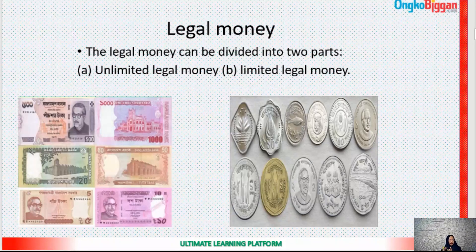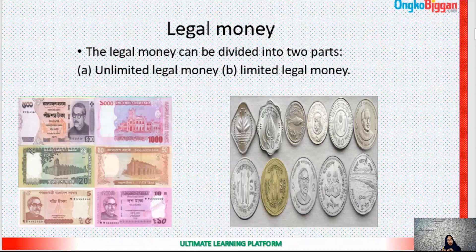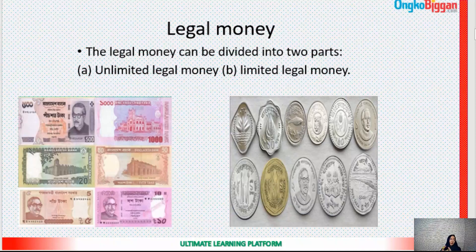Legal money can be divided into two parts: unlimited legal money and limited legal money. Unlimited legal money means the legal money by which any amount of transaction can be made legally.